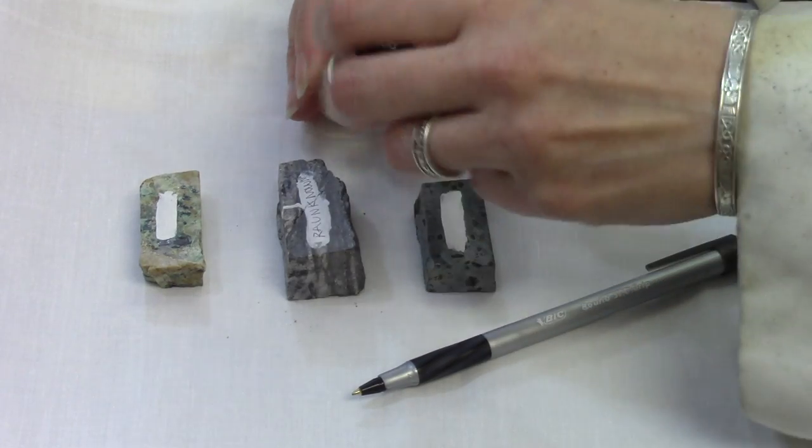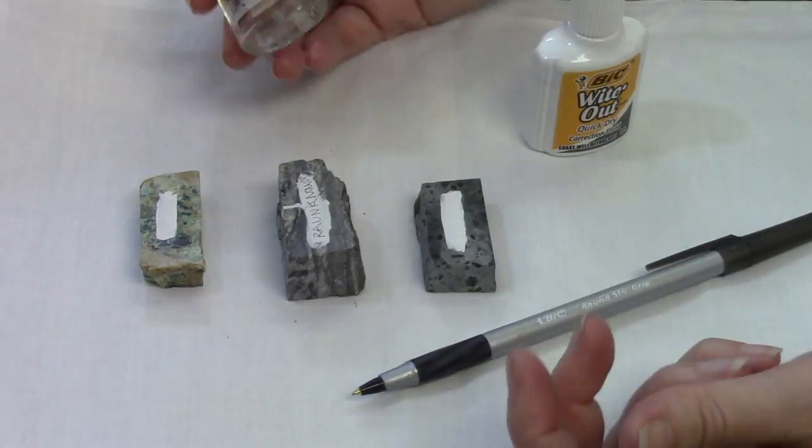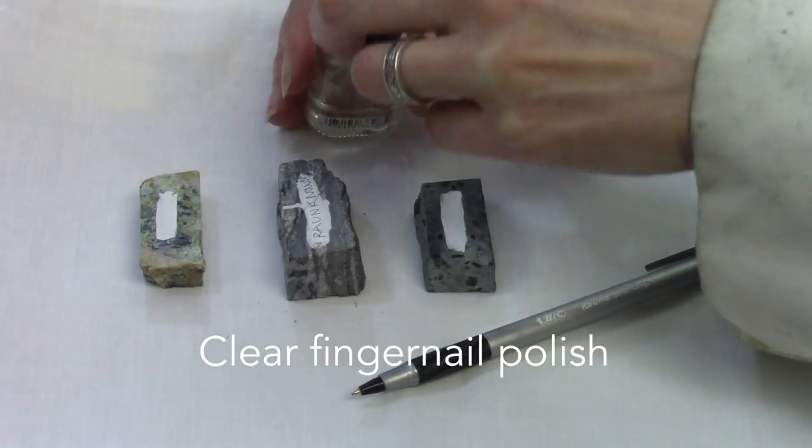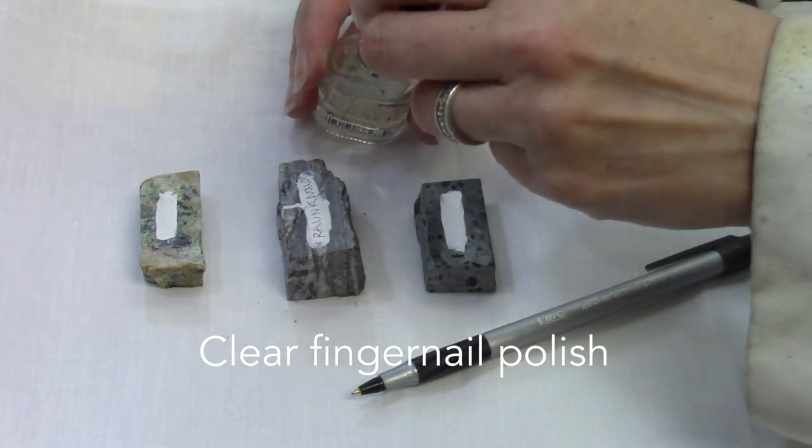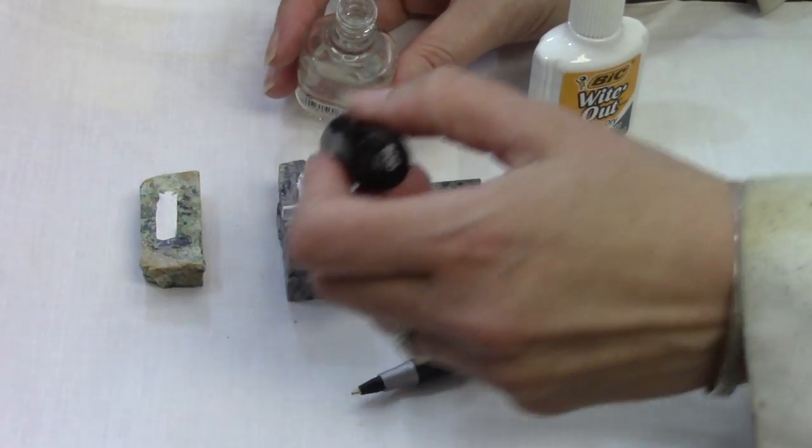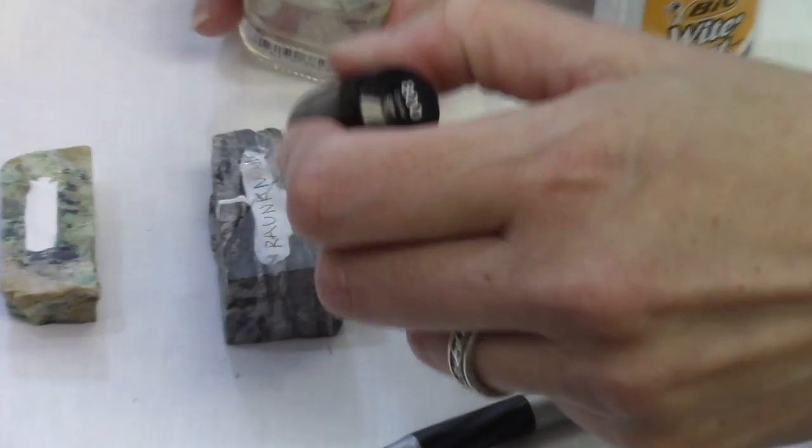This additional step requires you to take clear fingernail polish or another finish and put a layer on top of your label.